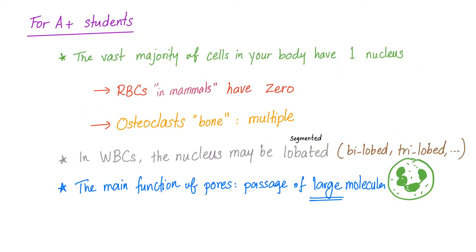For excellent students, the vast majority of cells in your body have one nucleus. Exceptions: Red blood cell in mammals have zero. I'm talking about the mature red blood cell. Osteoclast, which is a specific cell in your bone, has multiple nuclei.